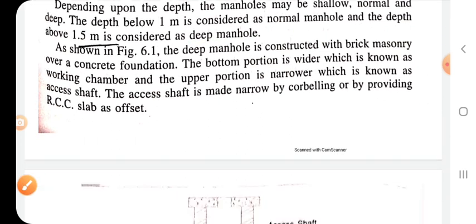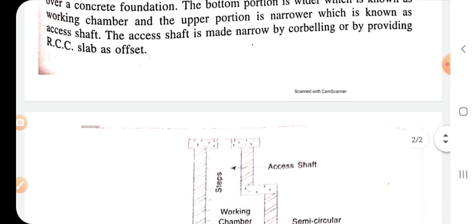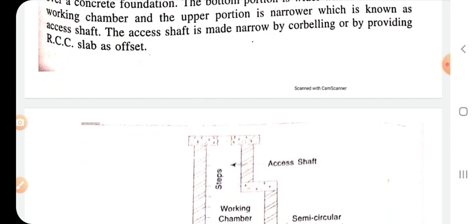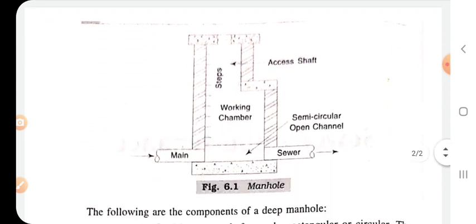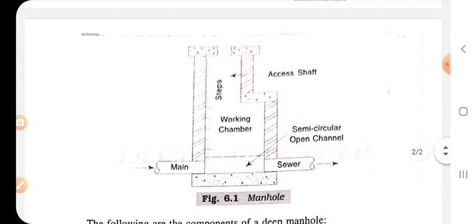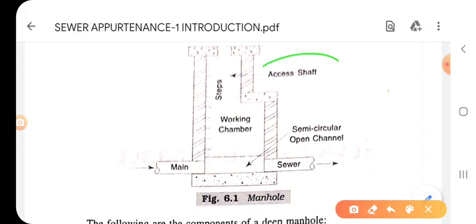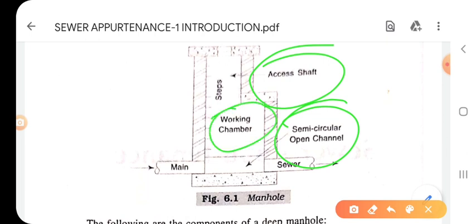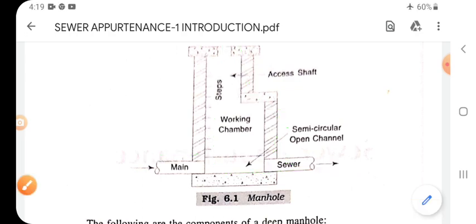Deep manhole construction uses brick masonry over a concrete foundation. The bottom portion is wider, which is known as the working chamber, and the upper portion is narrower, which is known as the shaft. An RCC slab is provided. See the picture: the shaft at top, semicircular open channel, working chamber, and the main sewer line passing through — this is the manhole.